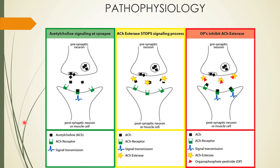Looking at a diagram of the normal synapse process: the presynaptic neuron releases the neurotransmitter acetylcholine into the synaptic cleft. Acetylcholine attaches to the receptors of the postsynaptic neuron, causing activation of the muscle. The required amount of muscle activation is achieved through this normal mechanism.